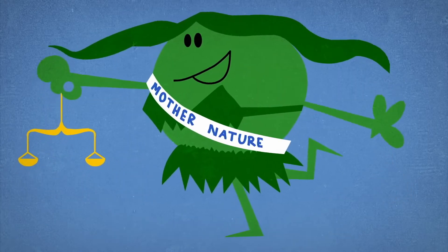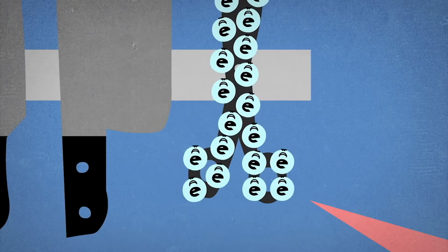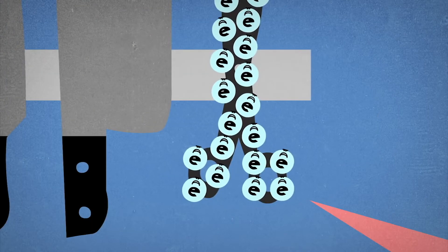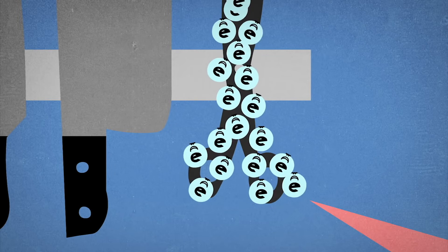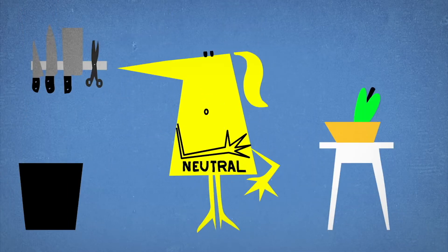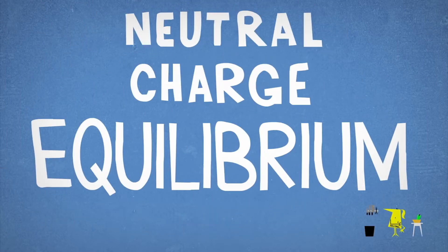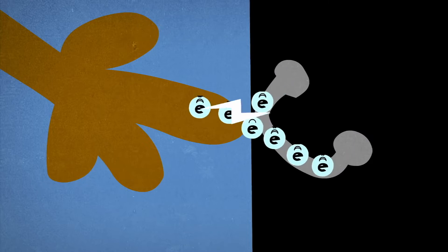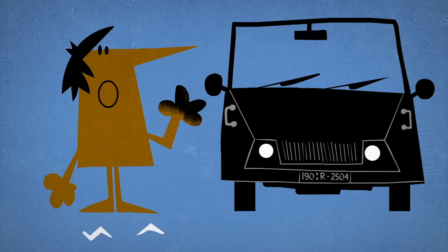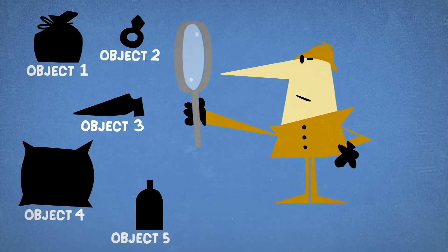But nature tends towards balance. So when one of these newly charged bodies comes into contact with another material, the mobile electrons will take the first chance they get to go where they're most needed — either jumping off the negatively charged object, or jumping onto the positively charged one, in an attempt to restore the neutral charge equilibrium. And this quick movement of electrons, called static discharge, is what we recognize as that sudden spark.